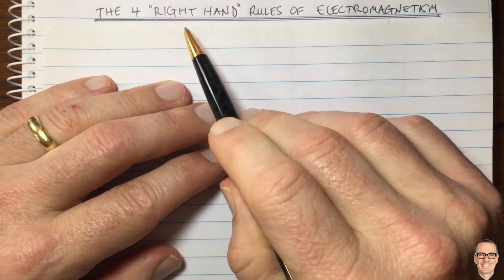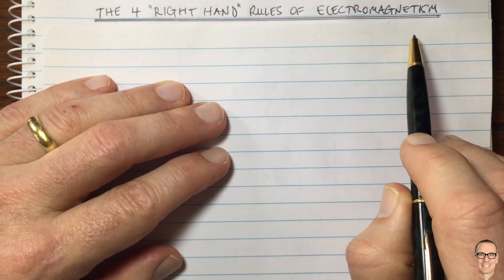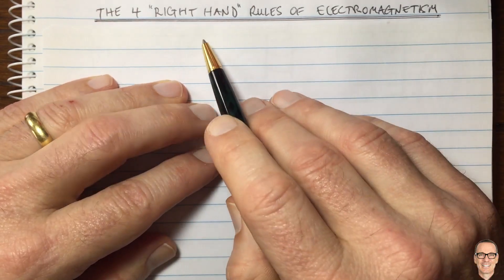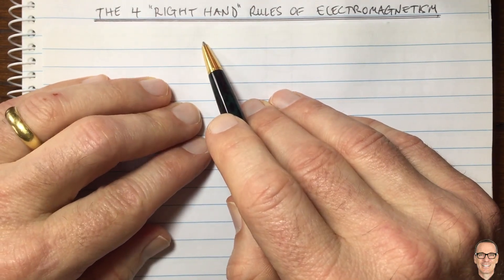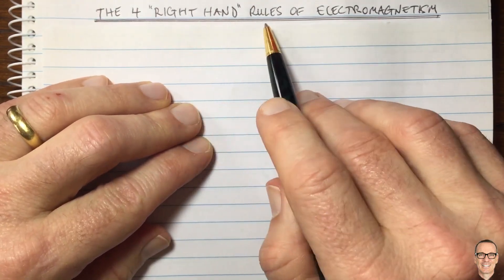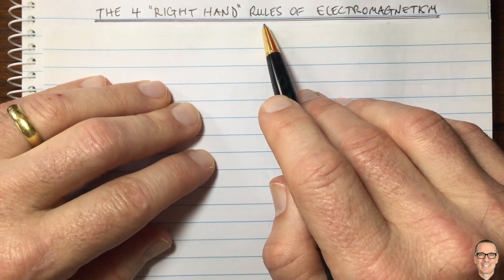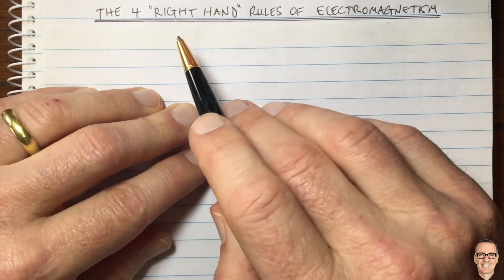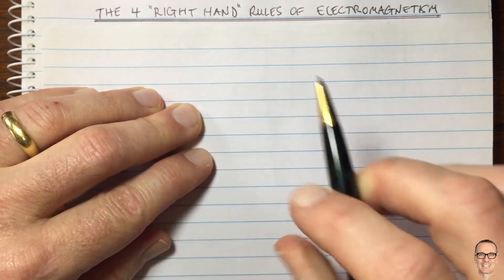Let's look at the four right-hand rules of electromagnetism. It can be confusing because if you search for right-hand rules, you'll often just be told one of them. Let's look at what the four of them are and how they relate.